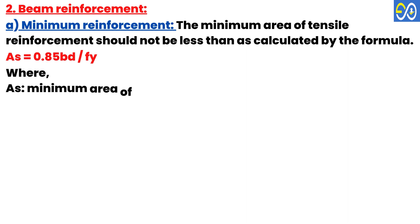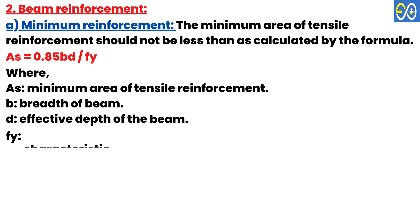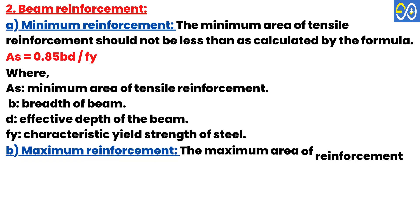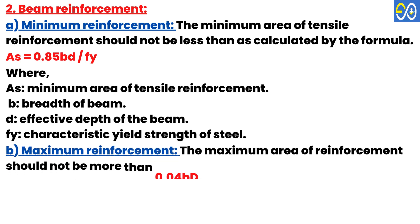Where A_s is the minimum area of tensile reinforcement, B is the breadth of the beam, D is the effective depth of the beam, and f_y is the characteristic yield strength of steel. Maximum Reinforcement: The maximum area of reinforcement should not be more than 0.04 × B × D.